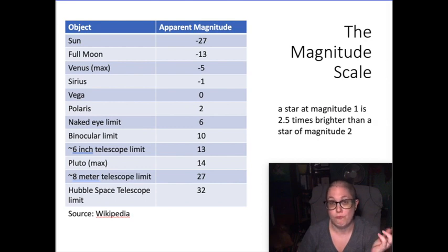Sun, really bright, negative 27. The moon, negative 13. The brightest stars you can see are at a negative one. Venus, when it's at its brightest, is even brighter than that. If you are at a site with very little light pollution, you can see down to magnitude six. That's the dimmest you can see. But then you add binoculars, you add telescopes, you can see to fainter and fainter or higher and higher magnitudes.